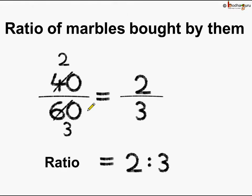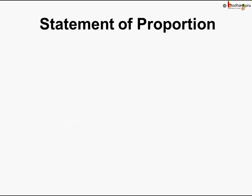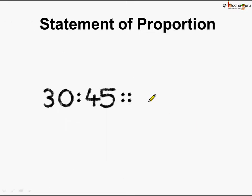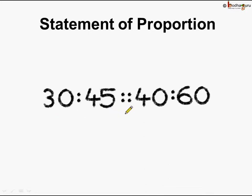What do we see? Both the ratios are the same, that is 2 is to 3, which means the two ratios are in proportion. So we can write the statement of proportion as: 30 is to 45 is as 40 is to 60. This was the statement of proportion.